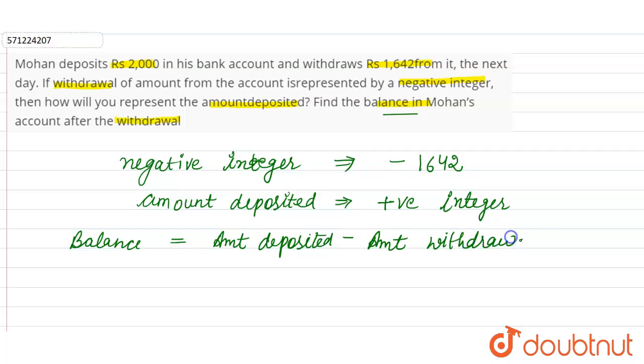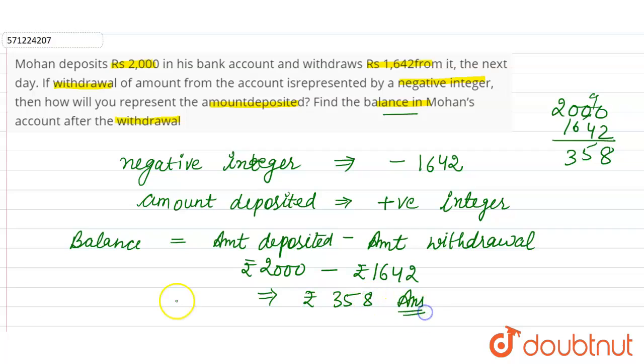So amount deposited was Rs. 2000 and amount withdrawal was Rs. 1642. So this equals Rs. 2000 minus Rs. 1642, which is equal to: 10 minus 2 is 8, 9 minus 4 is 5, 9 minus 6 is 3. So this is equal to Rs. 358. And this is the required answer for the given question.